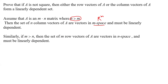The same argument applies when the number of rows is more than the number of columns. Then the set of M row vectors are vectors in R^N. Since M is more than N, you have more than N vectors in that set, so they have no other choice but being linearly dependent.